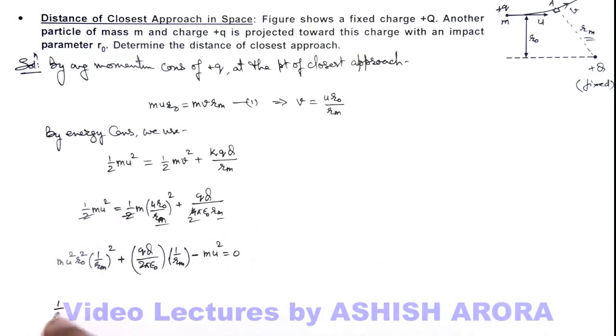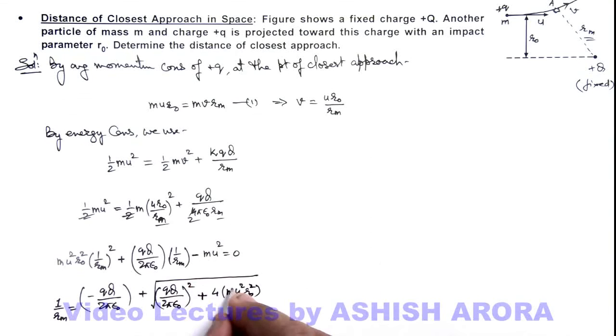This 1/rₘ, the solutions of this quadratic equation I can directly write. This will be -b, that is -(qQ/2πε₀) ± obviously I take plus, as if I take negative sign the distance will be negative that's not possible. And I write the discriminant of this equation, that is b²(qQ/2πε₀)² - 4ac, that is 4 times a in this situation is mu²r₀², c is -mu² so this will be plus m²u⁴ divided by twice of a that will be mu²r₀². So from here I'll directly get the value of distance of closest approach,